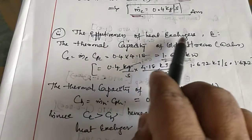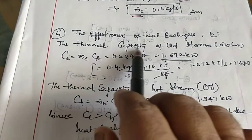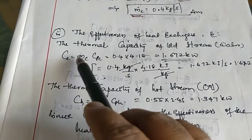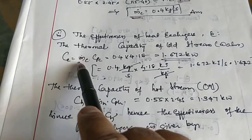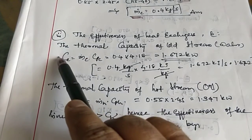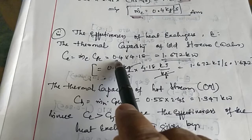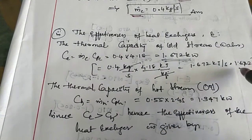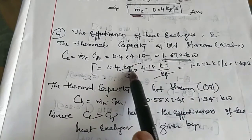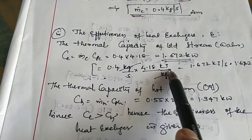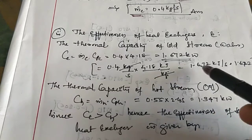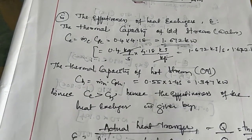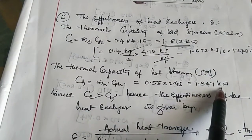Next, we calculate the effectiveness of the heat exchanger using the thermal capacities. The thermal capacity of the cold stream is C_C = M_C × C_PC = 0.4 × 4.18 = 1.672 kW. The unit comes from kg/s multiplied by kJ/kg°C. The thermal capacity of the hot stream (oil) is C_H = 0.55 × 2.45 = 1.347 kW.